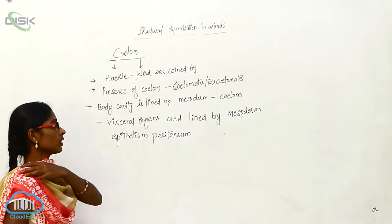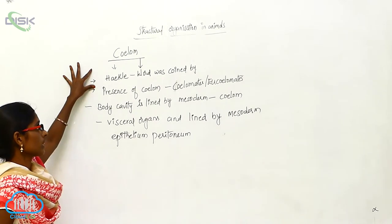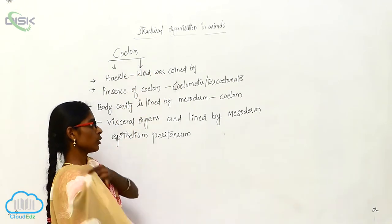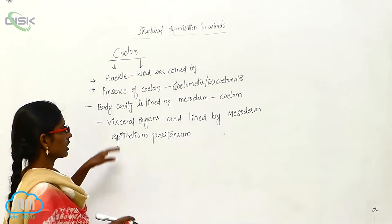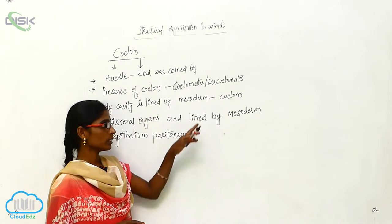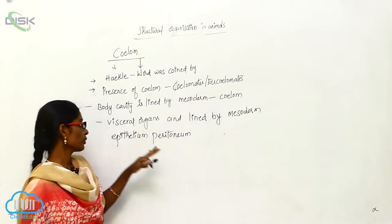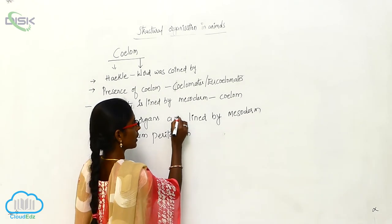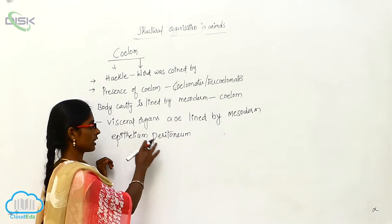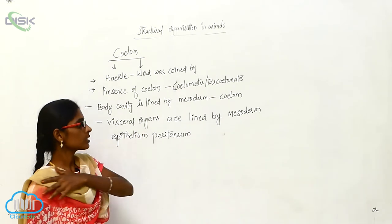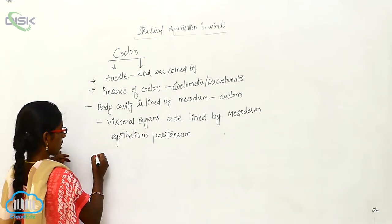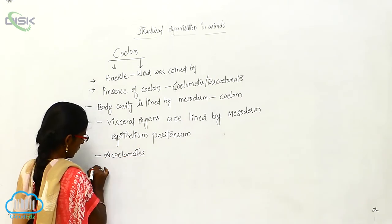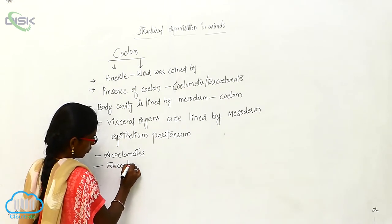So the coelom word was coined by Haeckel. Due to the presence of coelom, animals are called coelomates or eucoelomates. The body cavity is lined by mesoderm, that is why it is called the coelom.